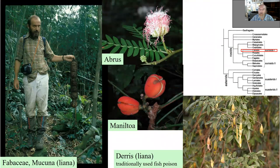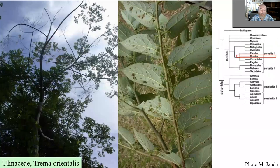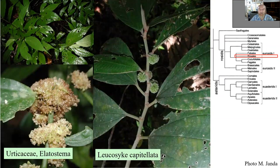Fabaceae — we already mentioned they have a huge diversity of life forms: lianas, shrubs, and Derris, a liana which is poisonous, with extract from the roots or stems used for poisoning fish in traditional fishing practices. Moraceae in Rosales: Antiaris, Artocarpus — that's breadfruit — and then a huge diversification of Ficus, fig trees. Ulmaceae: in addition to the genus Ulmus, we have Trema orientalis, a pioneer species. And then Urticaceae, with some shrubs and trees.